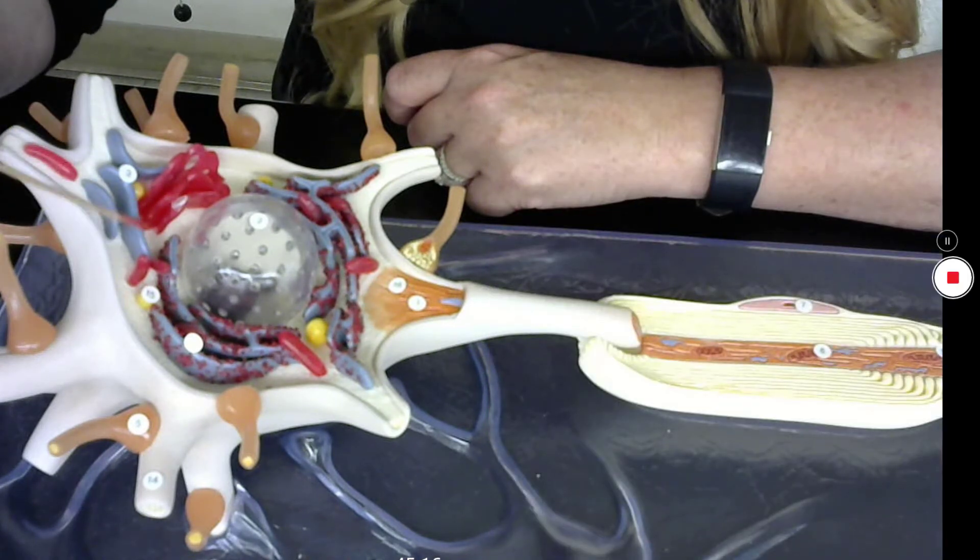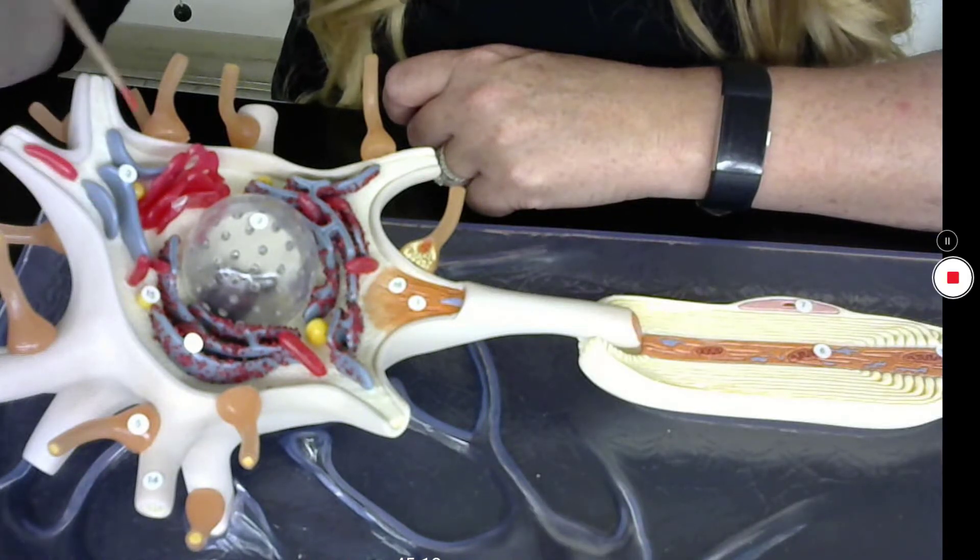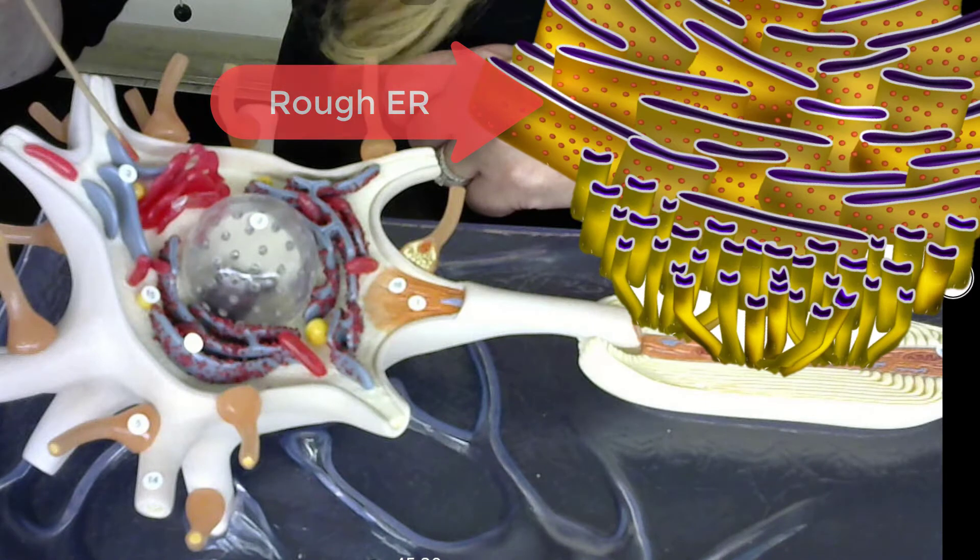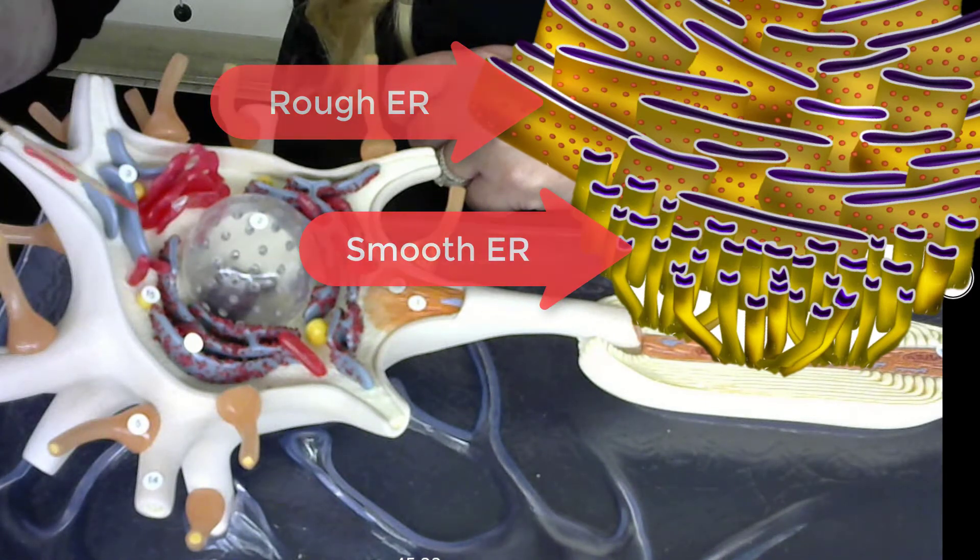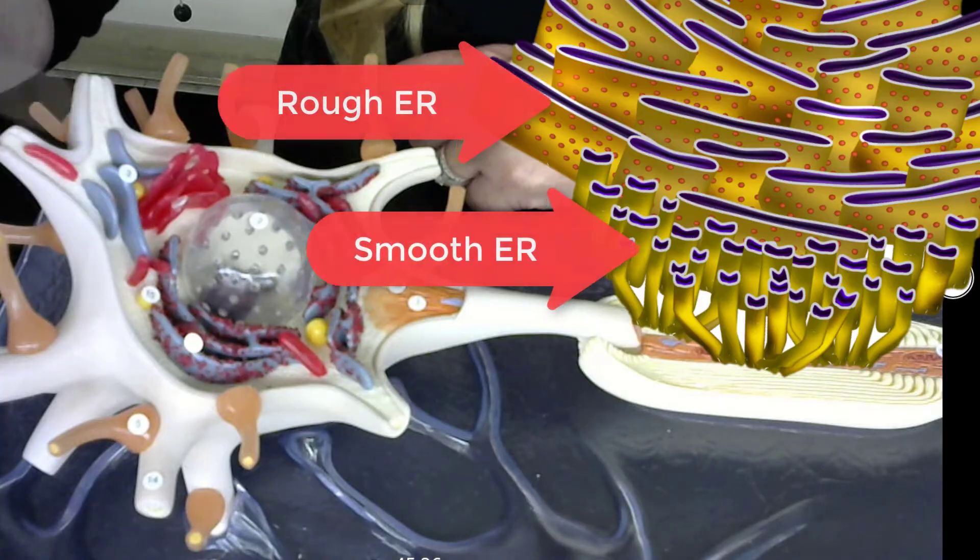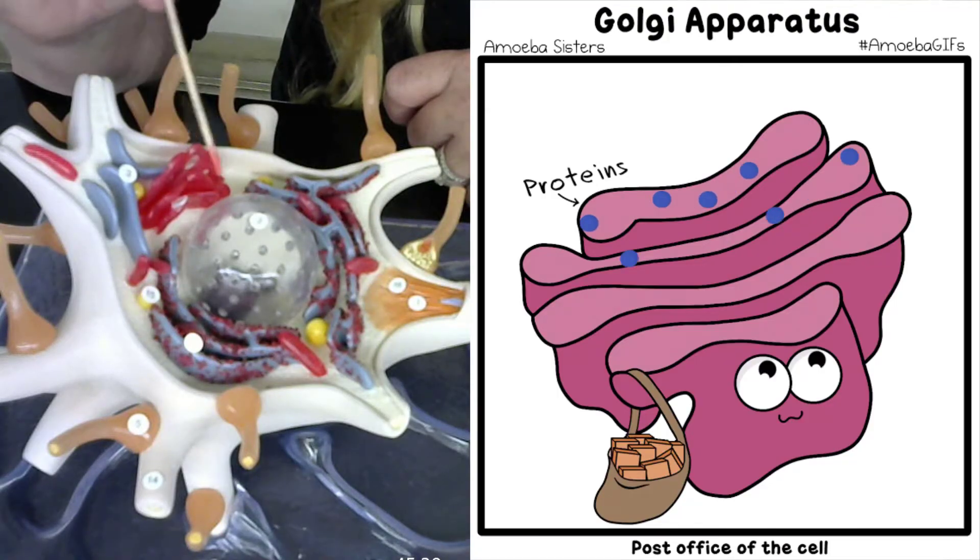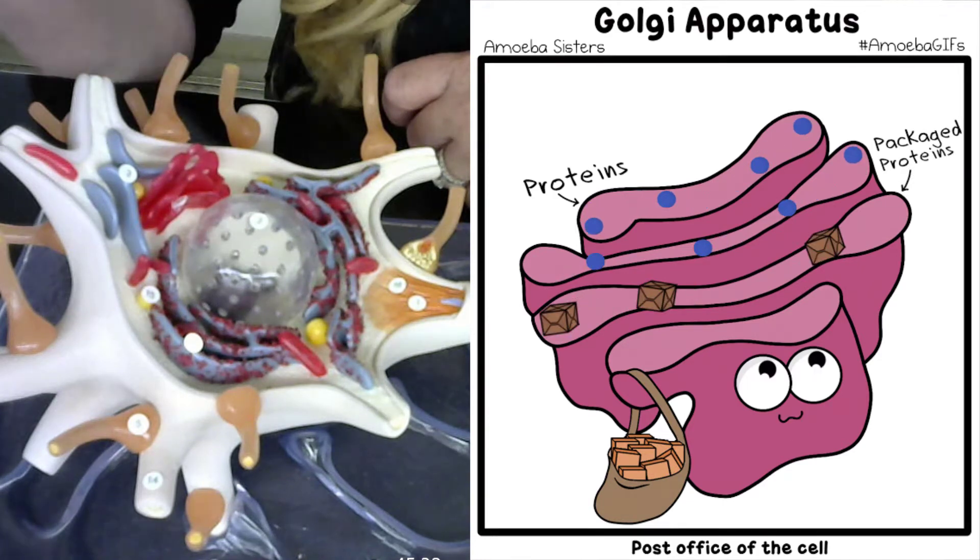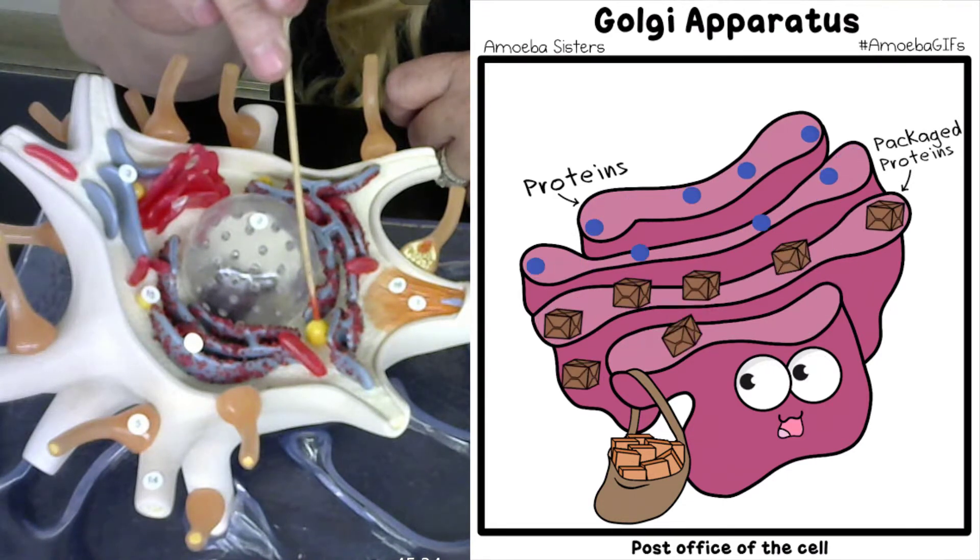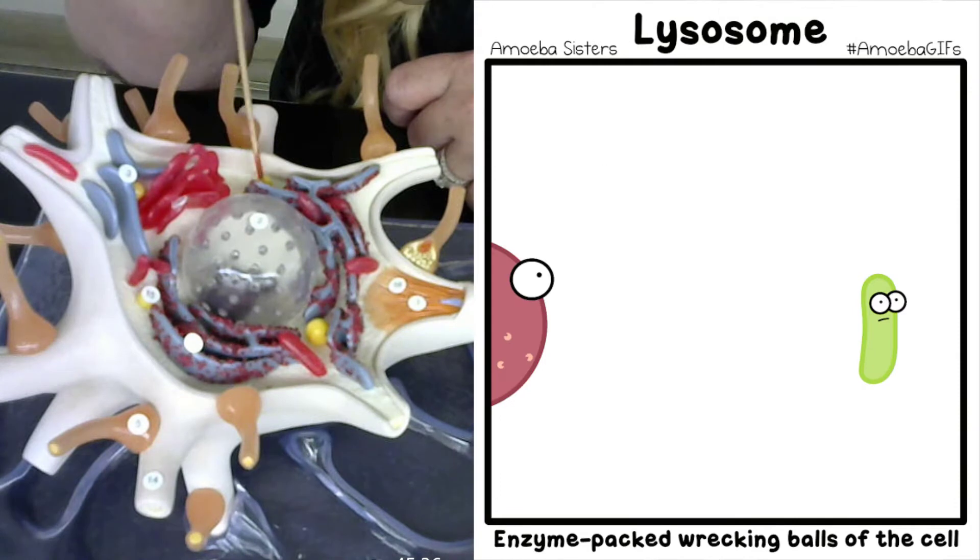I have another gray structure that looks a lot like the other one. The only difference is this one does not have any bumps. This would be the smooth endoplasmic reticulum. This is the Golgi body or the Golgi apparatus, and then I have these round structures, which are lysosomes.